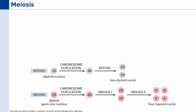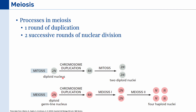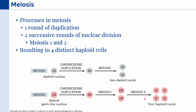Let's talk about meiosis, or the process of creating haploid cells. In this figure, we can see a comparison between mitosis and meiosis. In meiosis, there are three processes that occur. First, there is one round of duplication — this is the same in mitosis and meiosis — in which the 2N nucleus of an organism becomes a 4N nucleus. Afterwards, the main differentiator between the two processes is the number of rounds of nuclear division. In meiosis, there are two successive rounds of nuclear division, called meiosis 1 and meiosis 2. Meanwhile, in mitosis, there is only one round of nuclear division, and it produces two diploid cells. In meiosis, there are a resulting four distinct haploid cells.